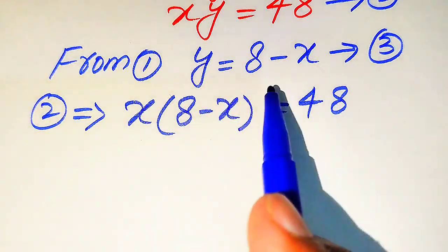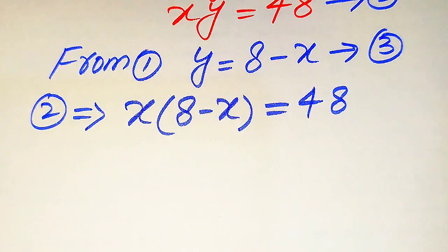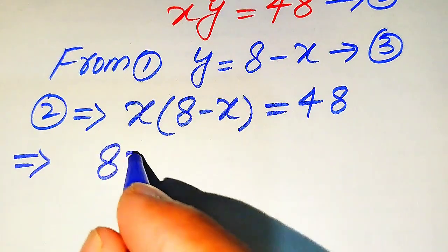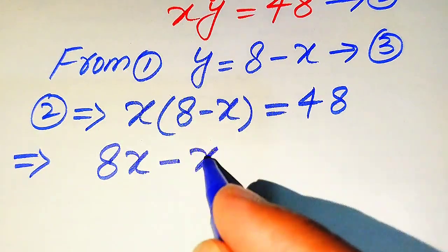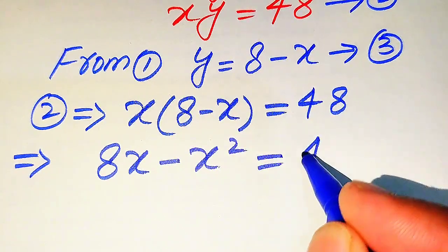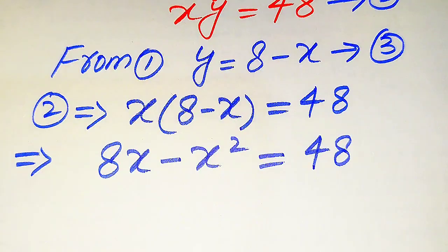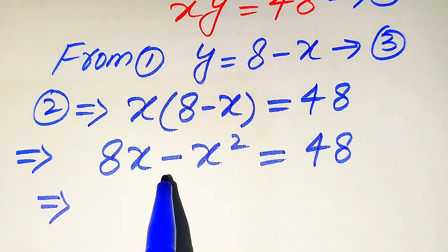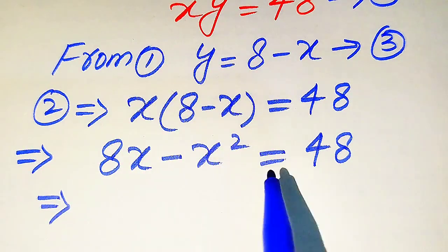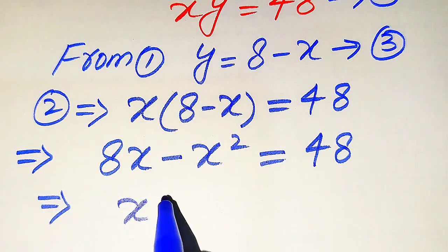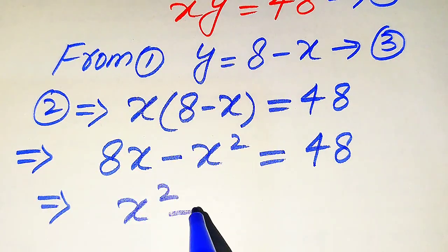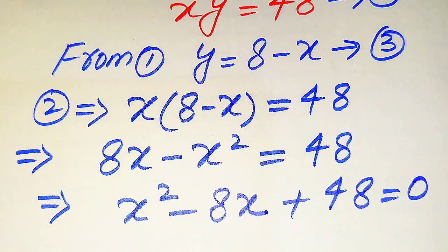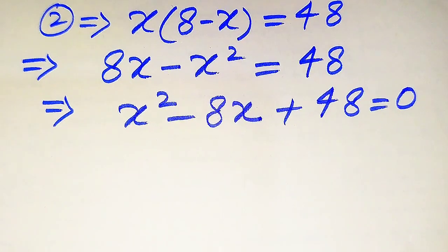Now we first solve this problem for the values of x, and at the last we substitute these values of x in equation number 3 to get the values of y. We multiply x on both terms and it becomes 8x minus x squared equals to 48. This is a quadratic equation but not in standard form, so we move both values from the left hand side to the right hand side. Negative x squared becomes positive, positive 8x becomes negative 8x, giving us x squared minus 8x plus 48 equals to zero.